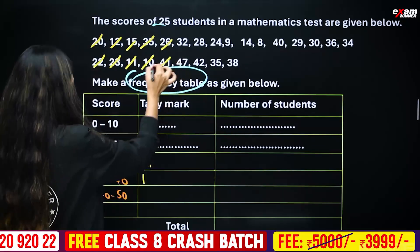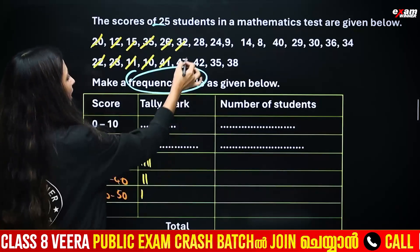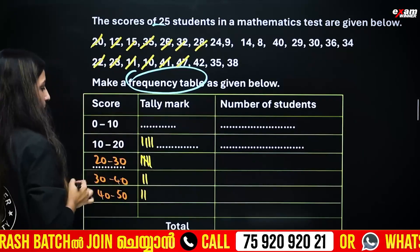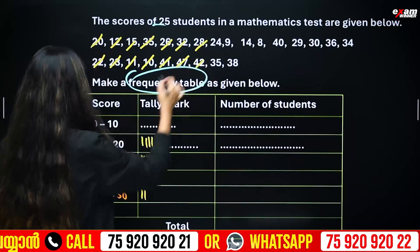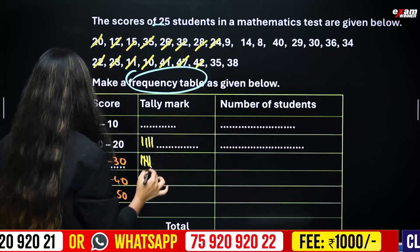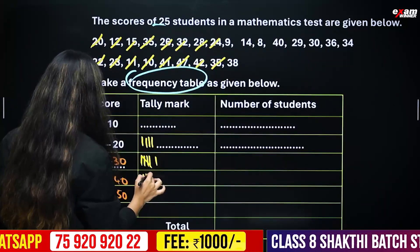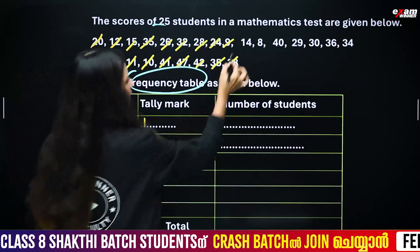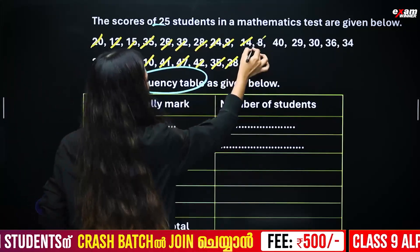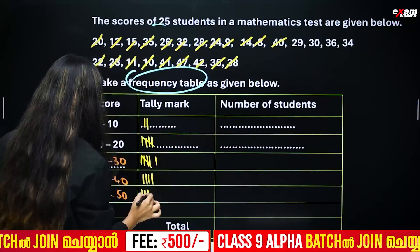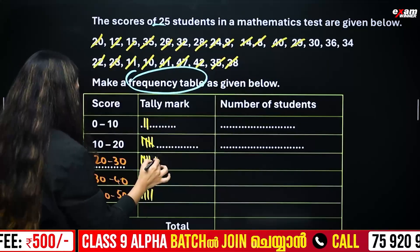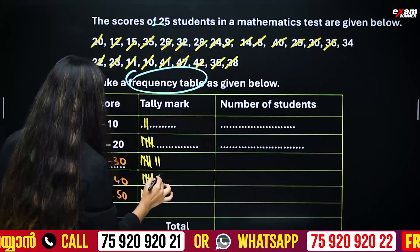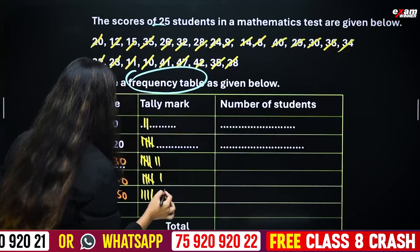Let's sort the scores into intervals: 20 to 30 gets 41; 40 to 50 gets 32; 30 to 40 gets 47; 40 to 50 gets 28; 20 to 30 gets marked. Then 42 goes to 40 to 50; 24 goes to 20 to 30; 35 goes to 30 to 40; 9 goes to 0 to 10; 38 goes to 30 to 40; 14 goes to 40 to 50; 29 goes to 20 to 30; 30 goes to 30 to 40; 36 goes to 30 to 40; and 34 goes to 30 to 40.